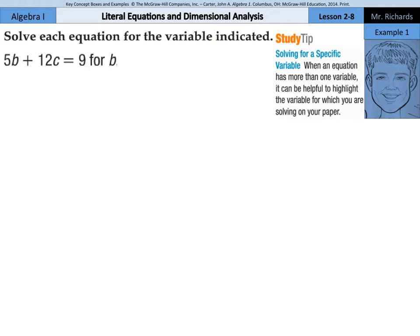And so if we rewrite our equation here, 5b plus the 12c equals 9, we want to solve this for b. Now I don't have a highlighter tool here, but I'll circle the b, and that's what we're trying to solve for.